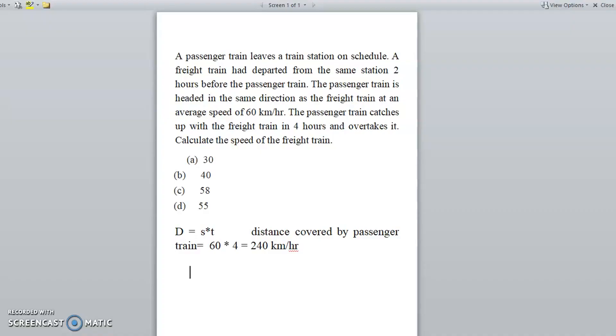So based on the same formula, we know the distance and we know the time, so we can calculate speed is equal to distance divided by time. So what is the distance covered? 240 divided by how much time the freight train takes for the same distance? 6. So the speed of the freight train is 40. Option B is the right answer.